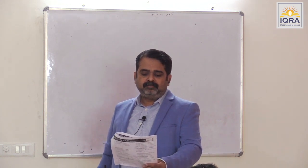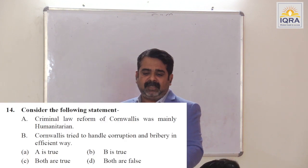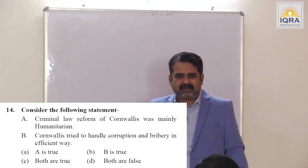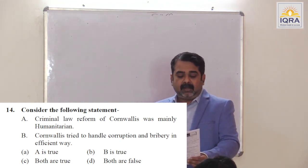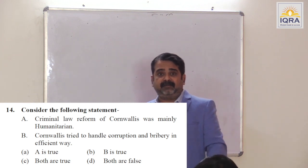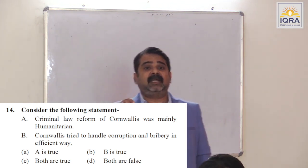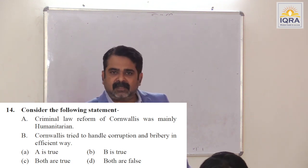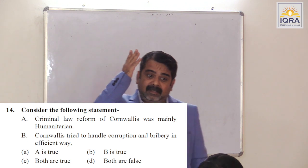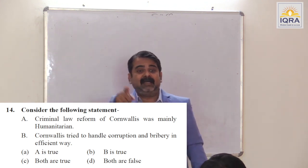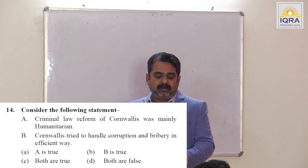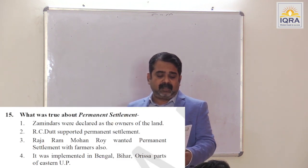Criminal law reforms of Cornwallis were mainly humanitarian — true; he ended the chopping off of hands for theft. Cornwallis tried to handle corruption and bribery efficiently by increasing salary and giving commission — salary of civil servant was 1500 plus 1% commission in 1793. Answer is C. What was true about permanent settlement? Zamindars were declared owners of the land — true.